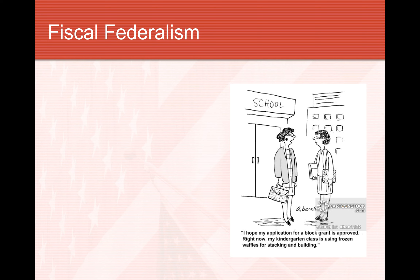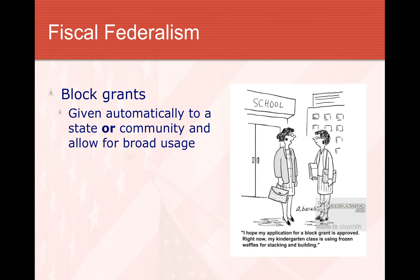The second type of grant is a block grant. When I think of block grants, I think of a giant chunk of money. It's basically a large grant that is automatically given to states and local communities and can be used for almost anything. States get a lot of say in what it's used for. For example, the state of Wisconsin gets block grants and can determine how to use them to benefit the entire state, giving much more power to the states.